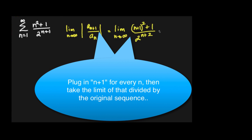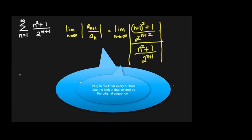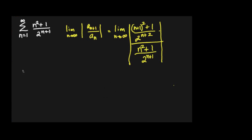Are you okay if I just go ahead and multiply by the reciprocal, or do you want me to divide by the original? The absolute value is not going to make a difference in this case, because there's no negative — everything is positive. So now if I multiply by the reciprocal.